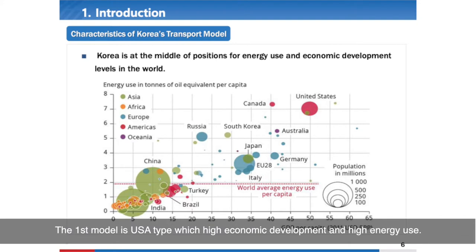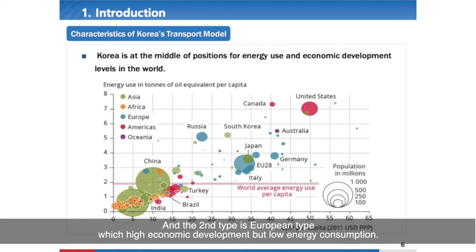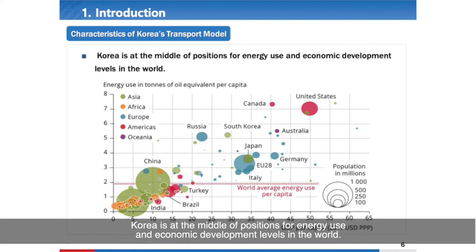The first model is the USA type, which has high economic development and high energy use — a transportation model based on vehicle movement. The second type is the European type, which has high economic development but low energy consumption. The last type is the developing country type, with lower energy use due to low economic development. Korea is positioned in the middle for energy use and economic development level in the world.